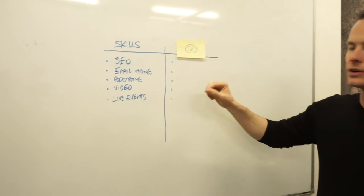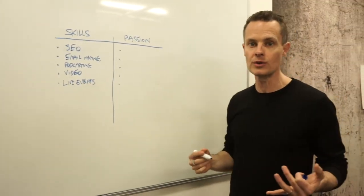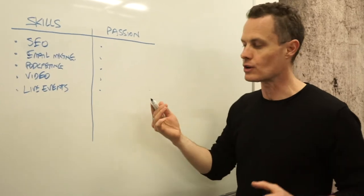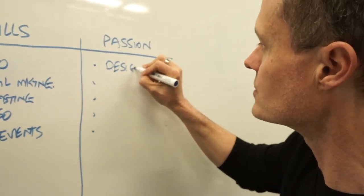Now what do you think is in column two? Column two is your passion, everything that you really enjoy doing. Again, it doesn't matter whether or not you're good at this stuff, you just got to write it down. So I'm going to write down design because I love design.